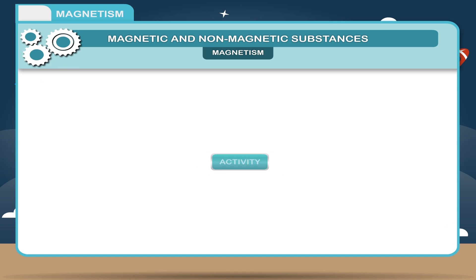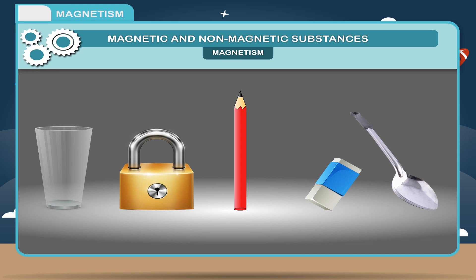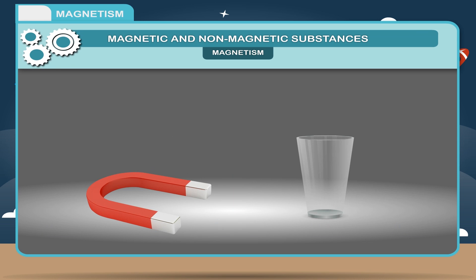Activity: To classify objects as magnetic and non-magnetic, bring different household objects like a glass, a lock, a pencil, an eraser, a spoon, etc. close to a magnet one by one.